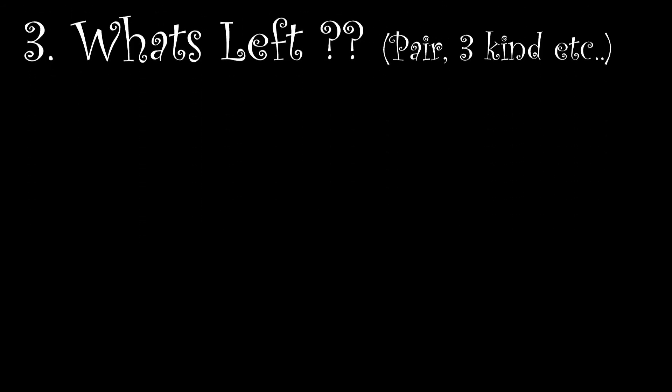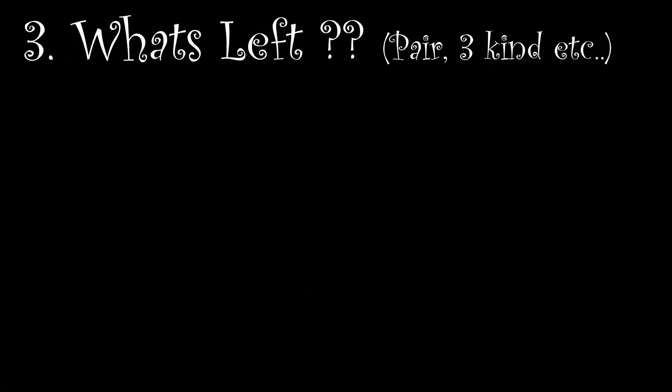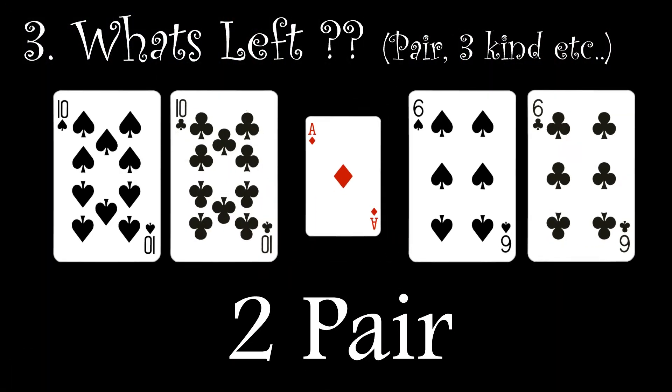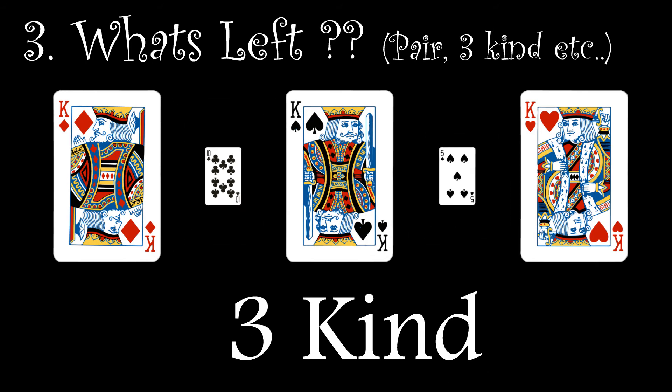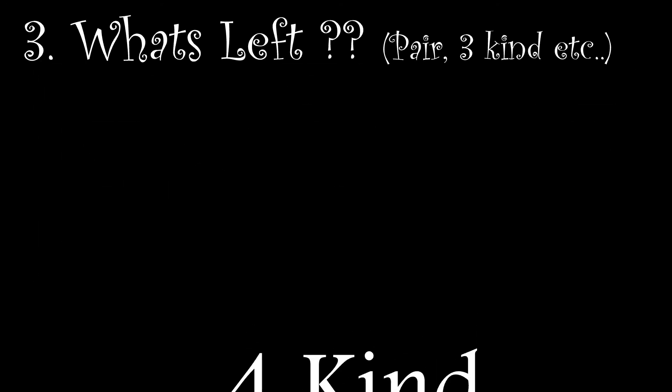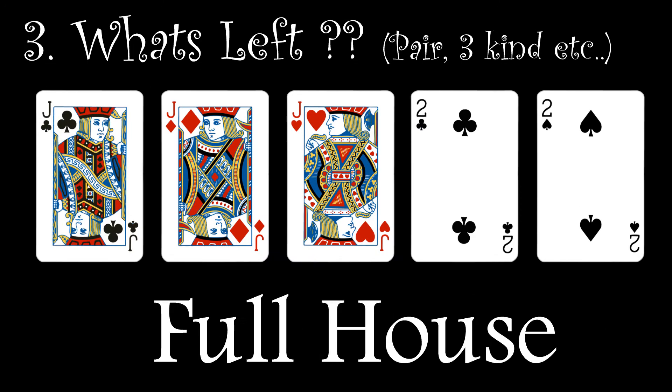So what is left? As we're done with flushes, straights and high cards. What remains are pairs, three and four of a kind and the full house hands.